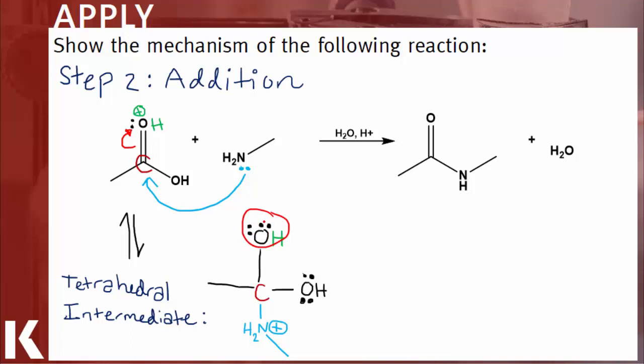But our nitrogen is unhappy because it has too many bonds and it's carrying a positive charge. In an acid catalyzed reaction, it's easy to correct our nitrogen's problem. Since there are hydrogen ions floating around all over the place in our solution,